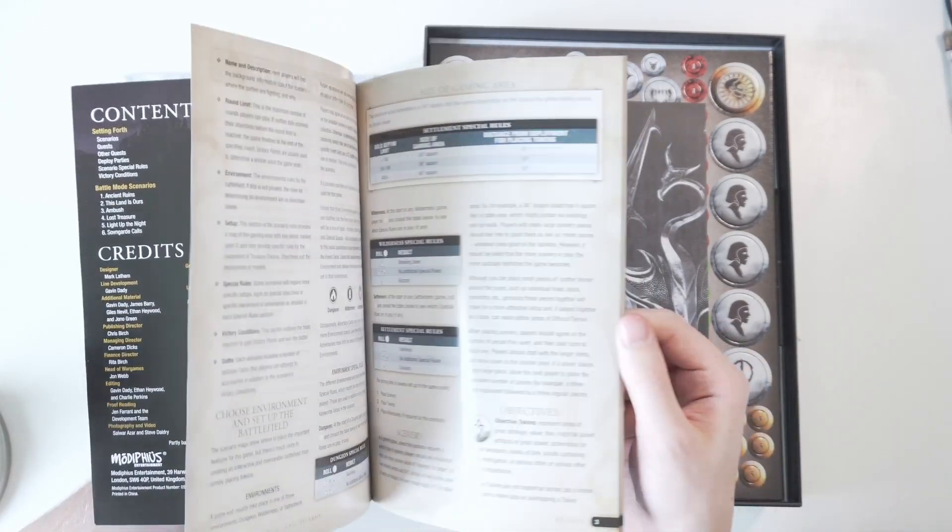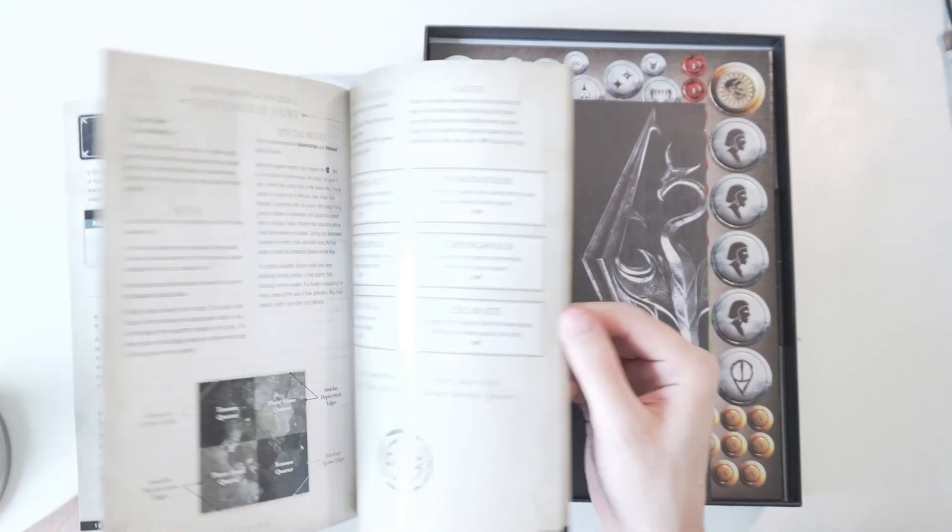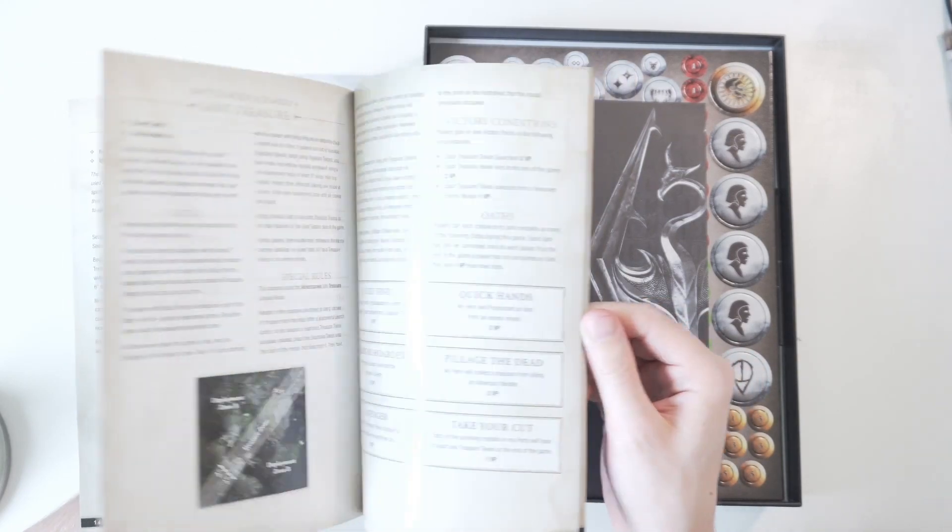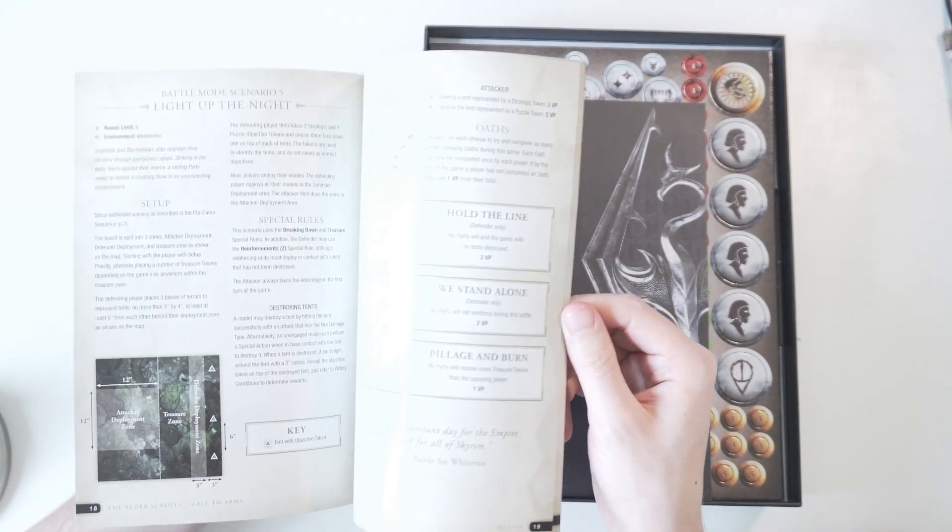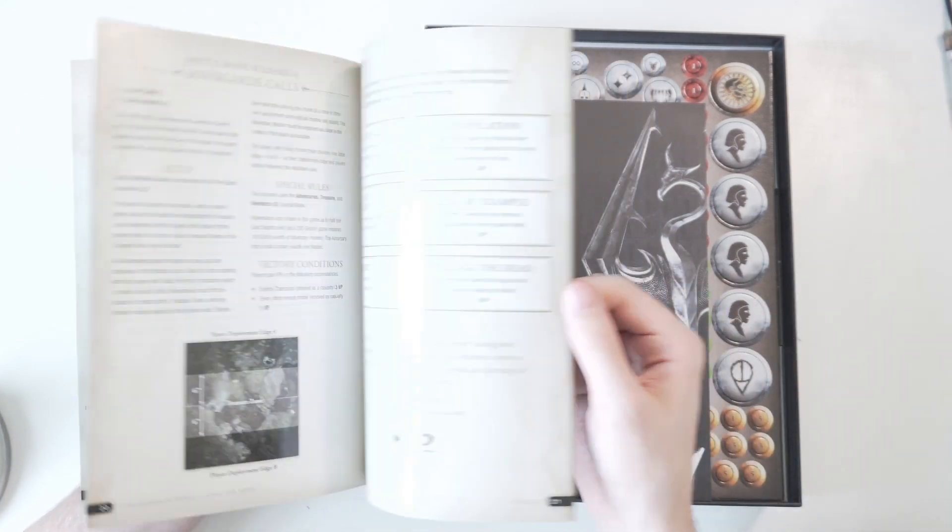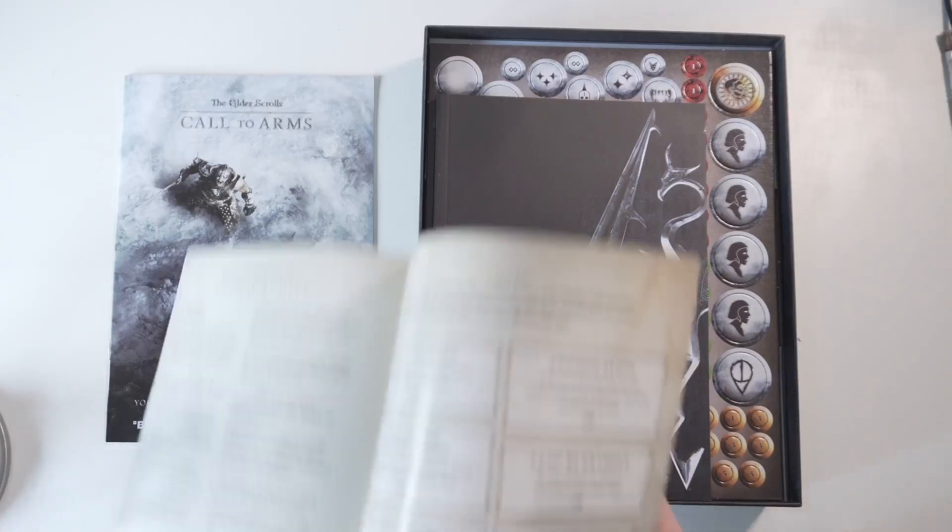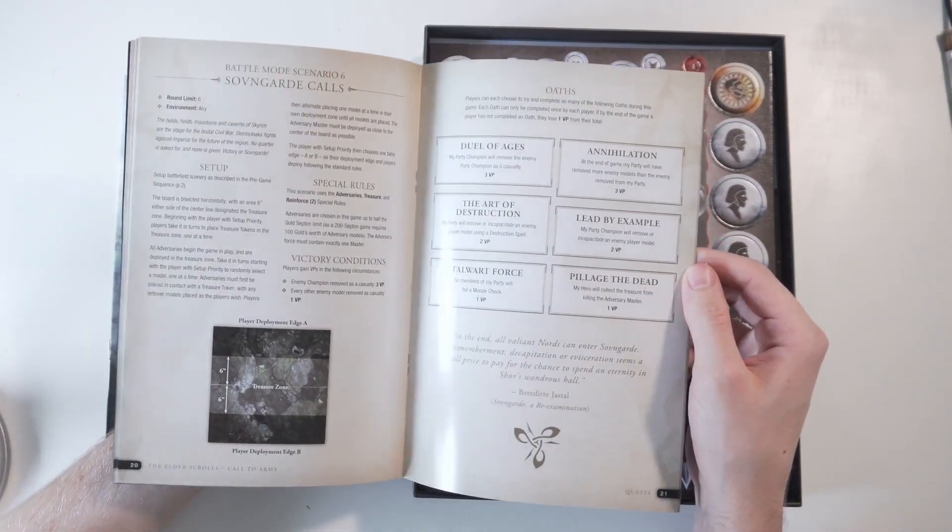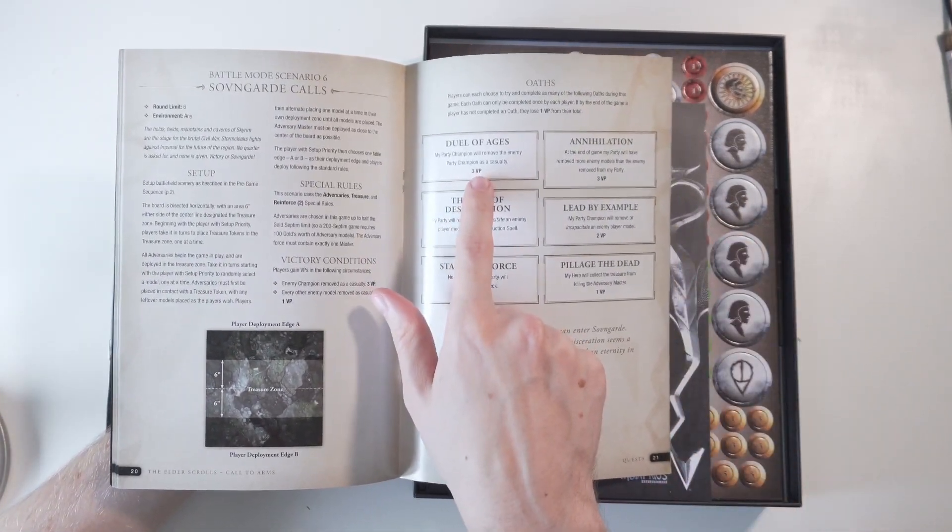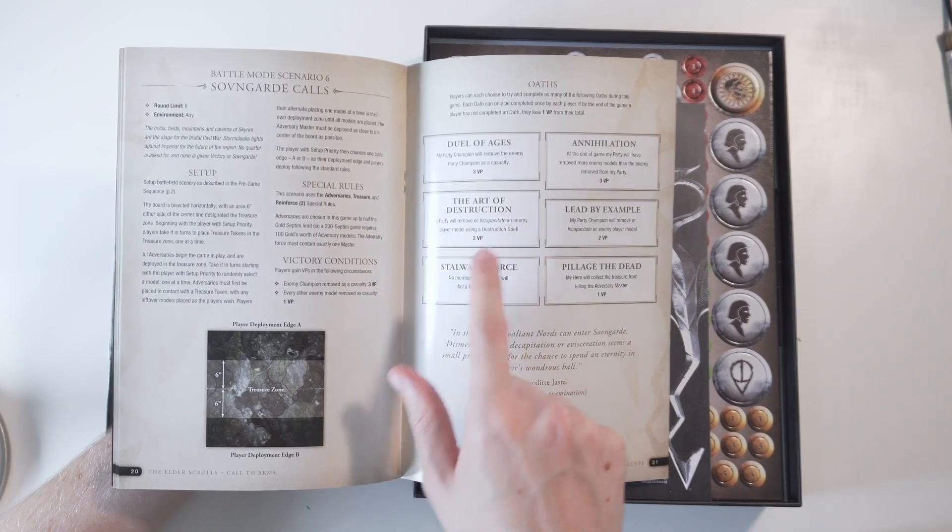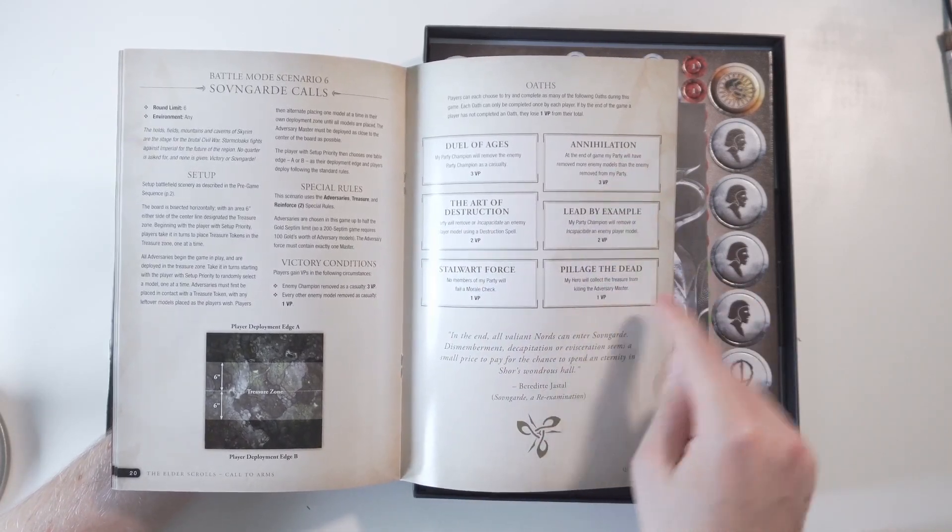This explains how the questing system works by the looks of it and how all the quests can be set up in the deployment zones. I'm just going to reduce the lighting a bit so you guys can actually read this. You can see you have the objectives here of how many victory points you get per quest and what you need to do to get them.